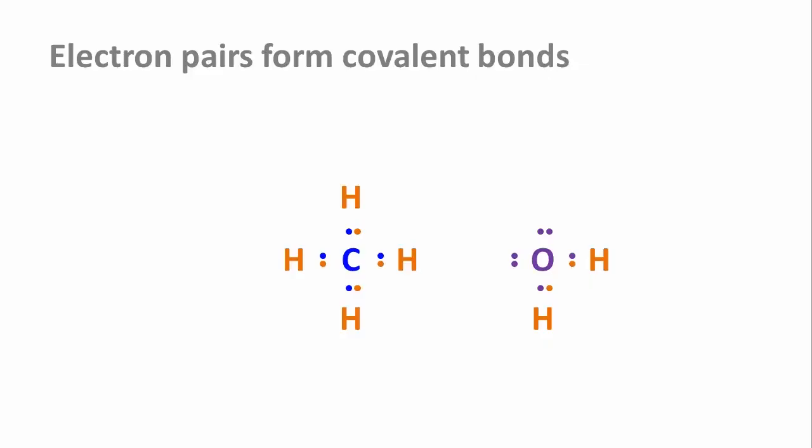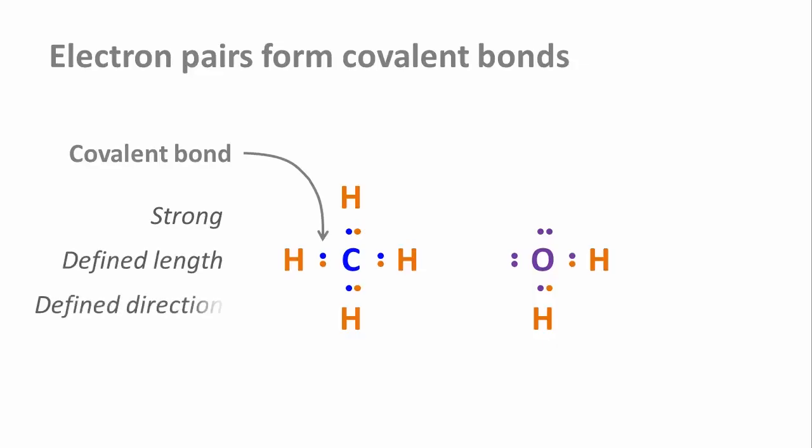These shared electron pairs that join up atoms to form molecules are what we call covalent bonds. Covalent bonds have a number of properties that define the stability and geometry of the molecule. They are strong, they have a pretty narrowly defined length, and they are directional. And as we're going to see, the directionality determines the geometry of the molecule.